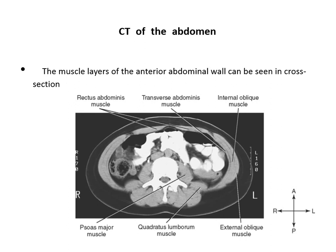On CT of the abdomen in cross-section, we see the muscle layers of the abdomen lying anterolaterally: the outer external oblique, the middle internal oblique, and the inner transverse abdominus. In the midline on either side is the rectus abdominus muscle, with the linea alba between them, and the linea semilunaris. Posterior abdominal muscles include the psoas muscle on either side of the vertebral body, the quadratus lumborum posterolateral to it, and the erector spinae as the back muscle.